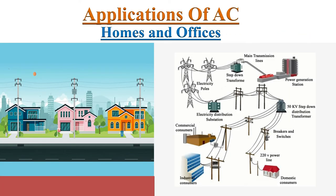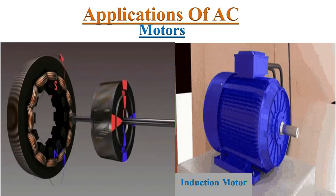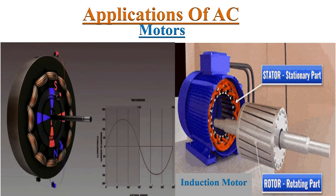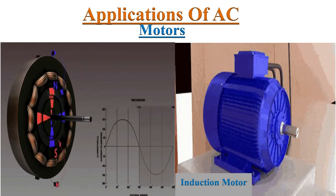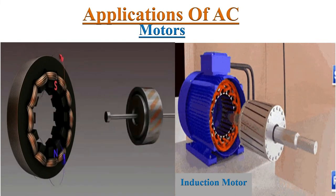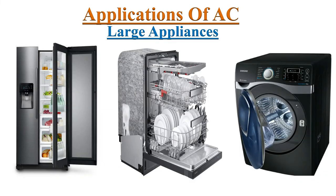Alternating current is used mostly in homes and offices. Mainly because the generating and transporting of AC across long distances is relatively easier. Alternating current is also capable of powering electric motors.